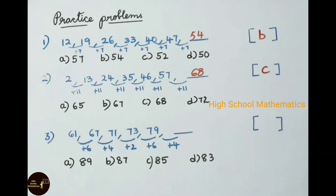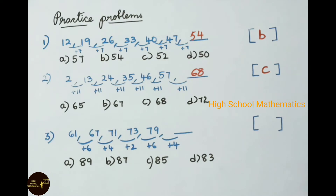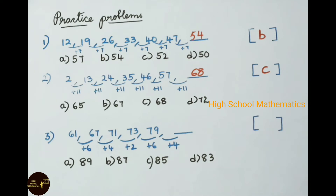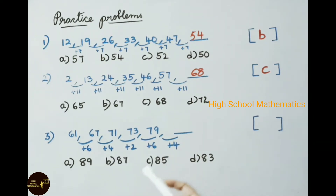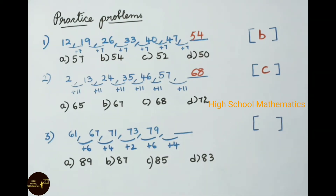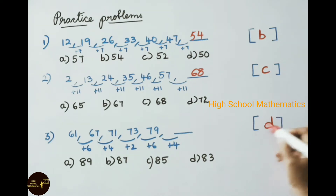Third practice problem: 61, 67, 71, 73, 79 — find the next term. Observe: 61 plus 6 is 67, 67 plus 4 is 71, 71 plus 2 is 73, 73 plus 6 is 79. The pattern cycles: plus 6, plus 4, plus 2, then repeats. After plus 6 comes plus 4, so 79 plus 4 is 83. The answer is option D, 83.